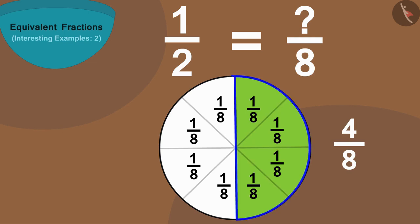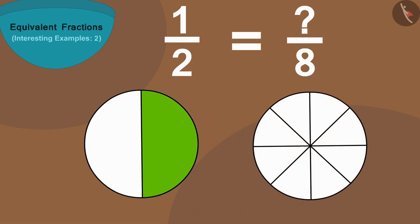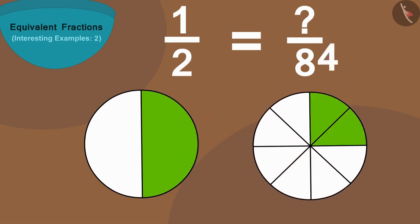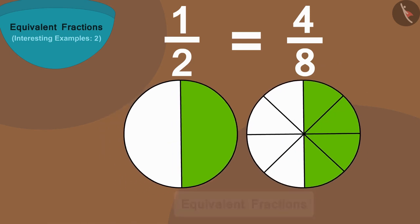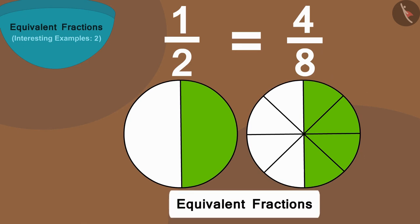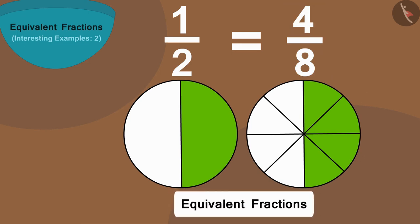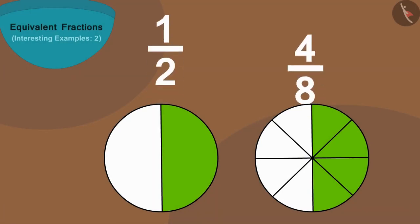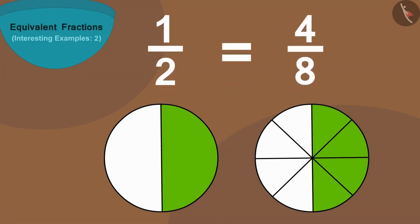Therefore we will color in four parts of this circle. In this way we have the numeral above our equivalent fraction as four. In this way, half is equal to four by eight.